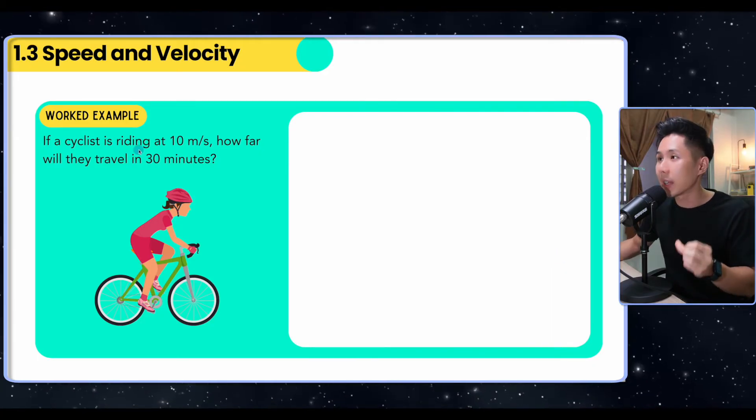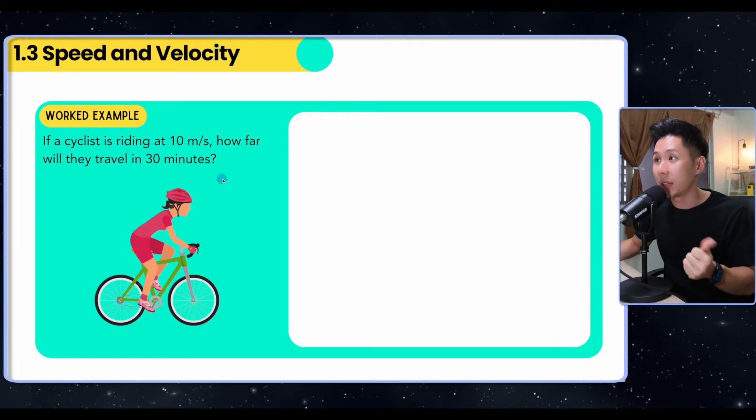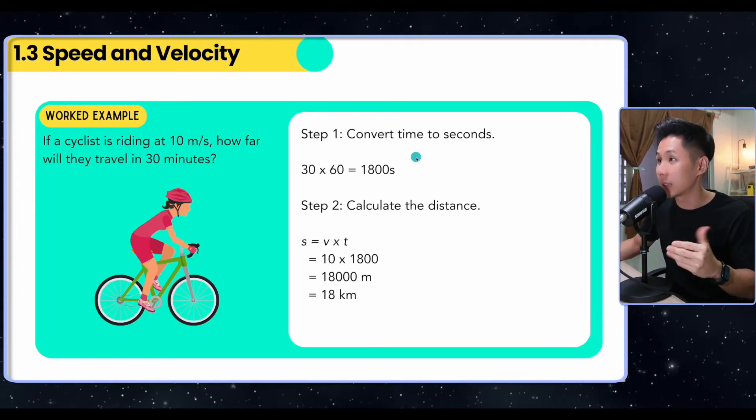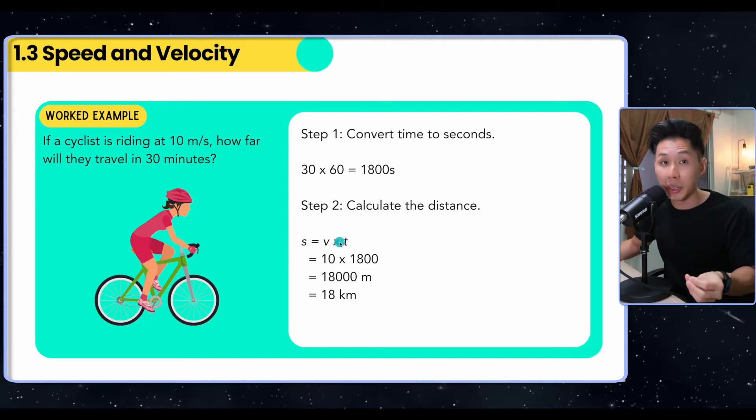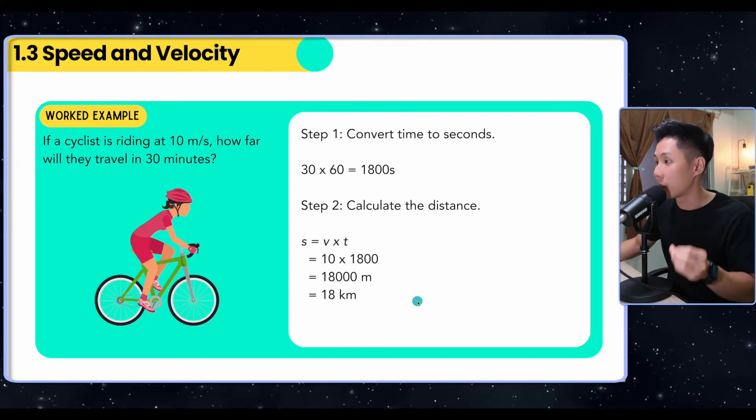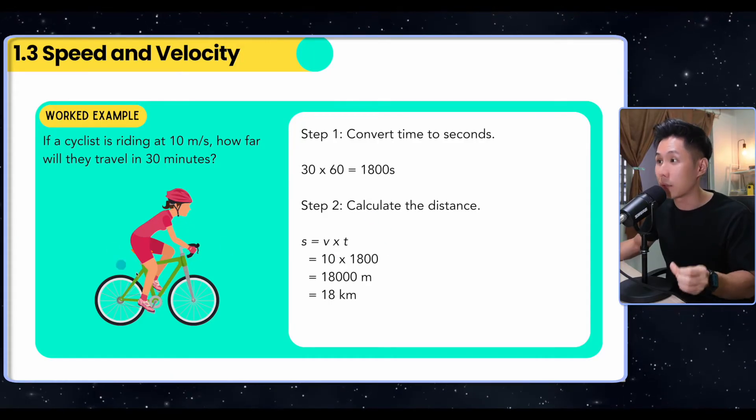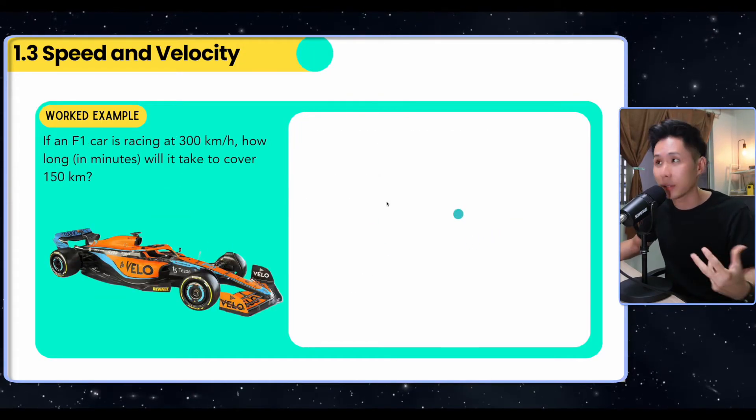Let's solve some questions. If a cyclist riding at 10 meters per second, how far will they travel in 30 minutes? Convert time into seconds and just use the formula that we are very familiar with: distance equals speed times time. Multiply and you shall get the distance traveled by this cyclist.